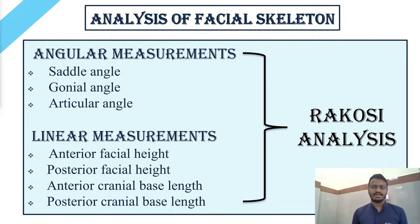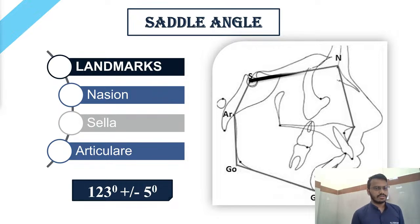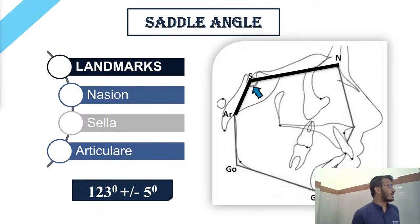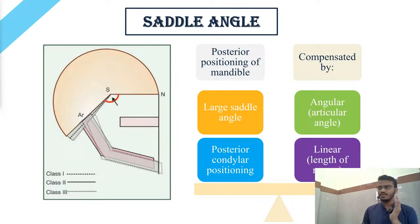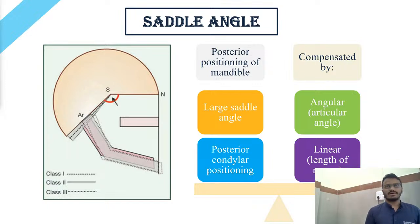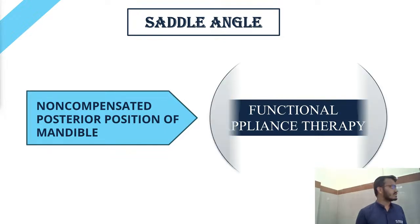The analysis of the facial skeleton includes angular measurements — saddle angle, gonial angle, and articular angle — and linear measurements: anterior facial height, posterior facial height, anterior cranial base line, and posterior cranial base line. The saddle angle is formed between Nasion-Sella and Sella-Articulare, with an average value of 123 ± 5 degrees. It suggests the relationship between the anterior and posterior cranial base. When the saddle angle is large, there is a posterior positioning of the mandible and condyle. This can be compensated by a change in the articular angle or the length of the ramus; if not compensated, functional appliance therapy in those cases is contraindicated.